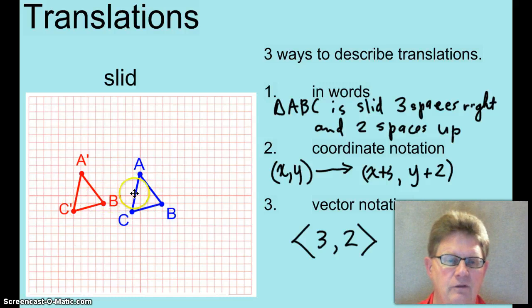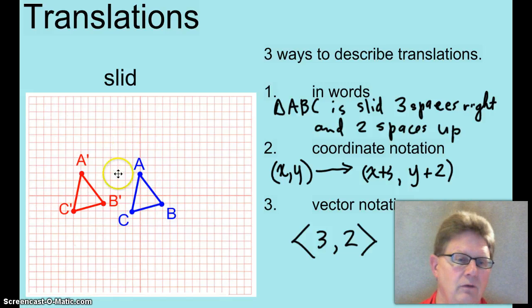Triangle ABC has been slid to what? One, two, three, four, five, six, seven, eight. So, in words, triangle ABC is slid eight spaces to the left. You don't have to tell me up or down, because there is no up or down.